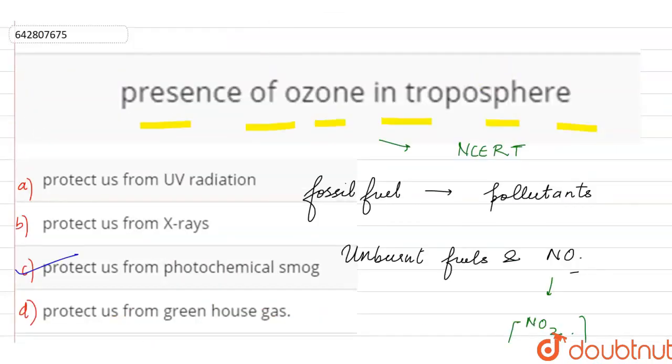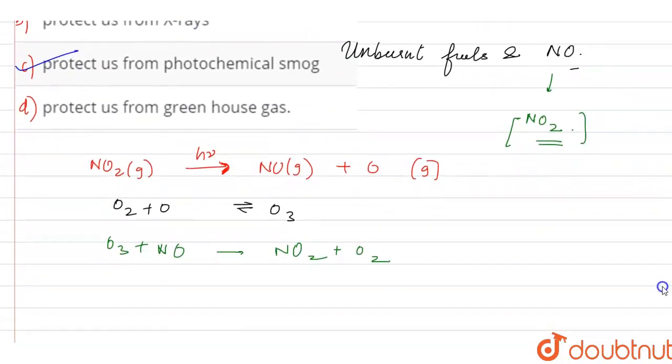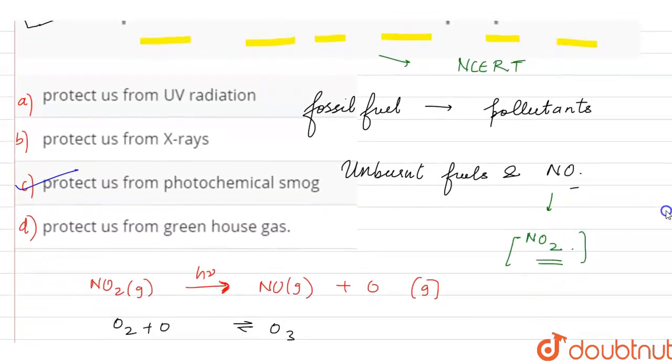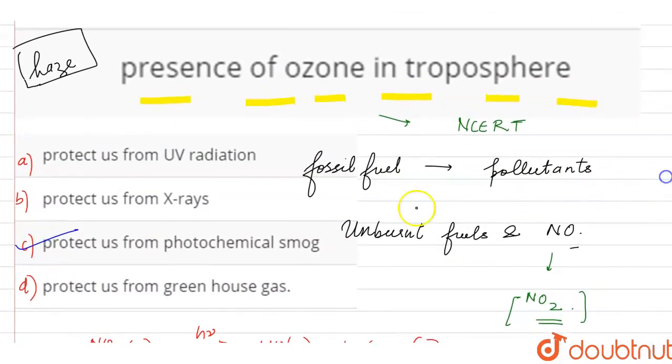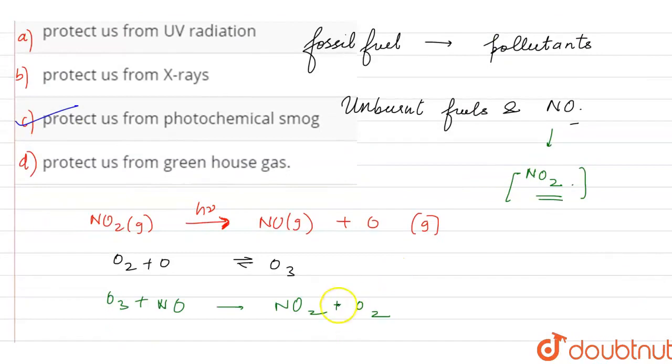It contributes to haze and you have seen in photochemical smog. This is our all over the surrounding haze formation. Okay. So what is the presence of the ozone in the troposphere? It will protect us from this photochemical smog.